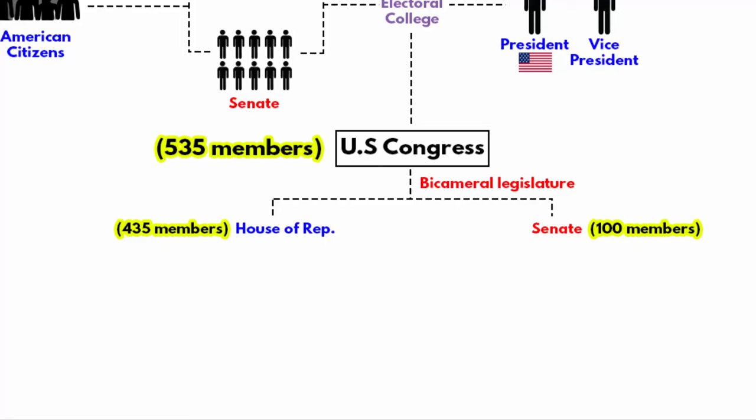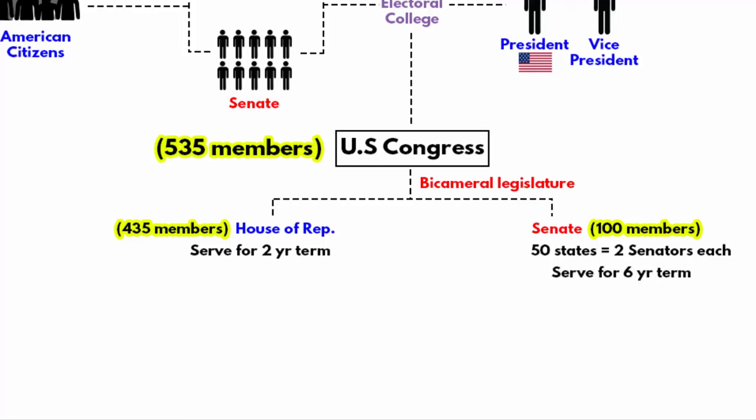Members of the House of Representatives make up the Electoral College. They serve for two-year terms and are considered for re-election every two years. Each state, regardless of population or size, has two senators. Currently, there are 100 senators representing the 50 states. Each senator is elected at large in the state for a six-year term. Elections to the Senate are conducted every two years so that only about one-third of the Senate is up for re-election during any election.